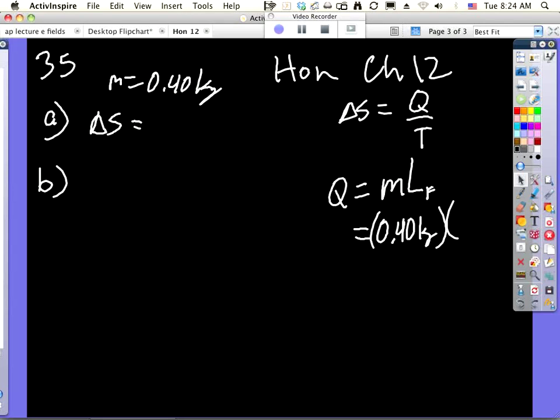Alright, so we have this. The equation for entropy is just Q over T. This T is set because... is this silver melting or is it freezing?